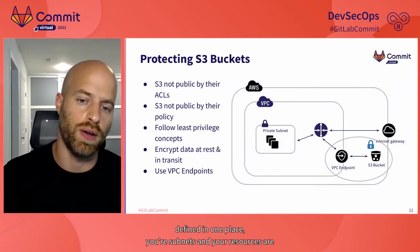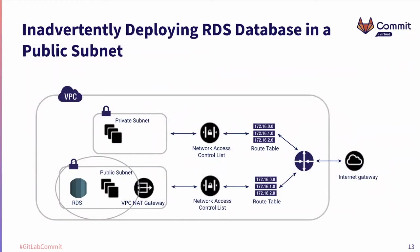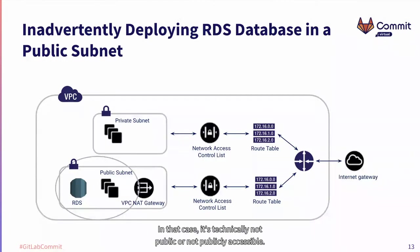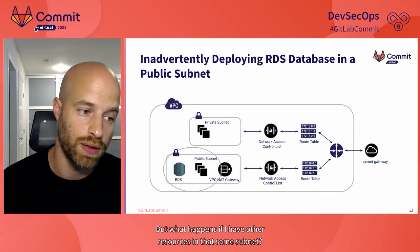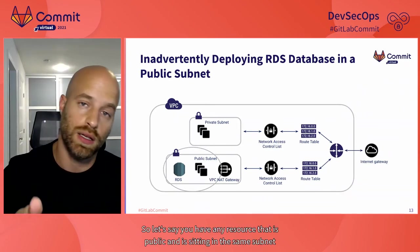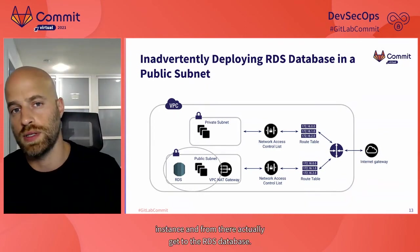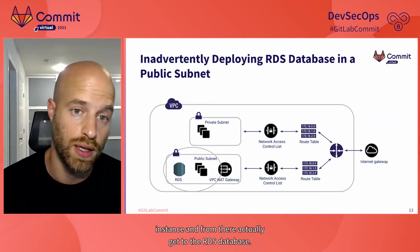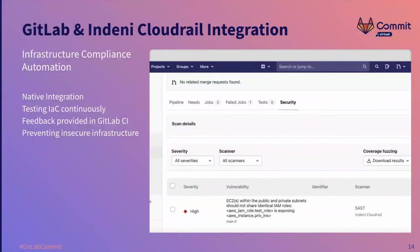Even though your buckets are defined in one place and your subnets and resources are defined elsewhere, dynamic analysis can connect the dots. Lastly, a very interesting example is the impact between resources that expose one another. Say you've deployed an RDS database to a subnet and did not allocate a public IP — so technically it's not publicly accessible. But what if you have other resources in that same subnet, like an EC2 instance that is public? By default there's access from the EC2 to the RDS database, meaning a hacker can compromise the EC2 and from there reach the RDS database. Again, this is something you find only through dynamic analysis.